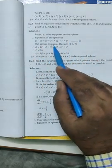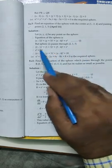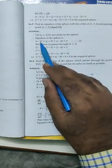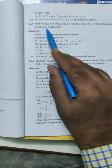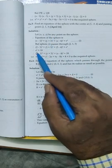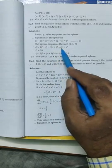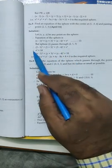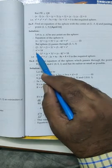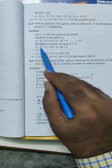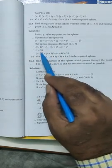But sphere passes through (2,1,3). This sphere is passing through this point. Therefore, this point satisfies the equation of sphere. (2-1)² + (1+3)² + (3-4)² = R². Therefore, R² equals.